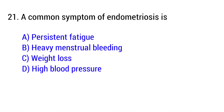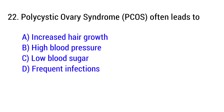Question number 21: A common symptom of endometriosis is — the right answer is Option B: Heavy menstrual bleeding. Question number 22: Polycystic ovary syndrome (PCOS) often leads to — the right answer is Option A: Increased hair growth.